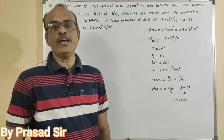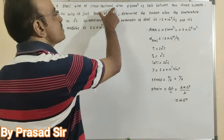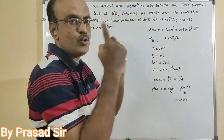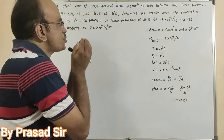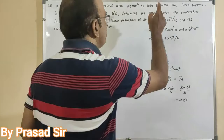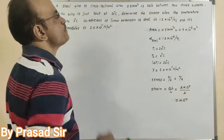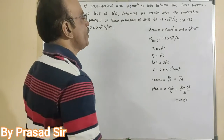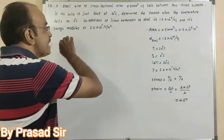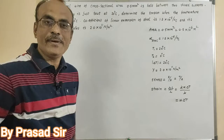Question number 28: A steel wire of cross-sectional area 0.5 millimeter square is held between two fixed supports. If the wire is just taut at 20 degrees centigrade, determine the tension when the temperature falls to 0 degrees centigrade. The coefficient of linear expansion of steel is 1.2 × 10⁻⁵ per degree centigrade and Young's modulus is 2.0 × 10¹¹ newton per meter square.